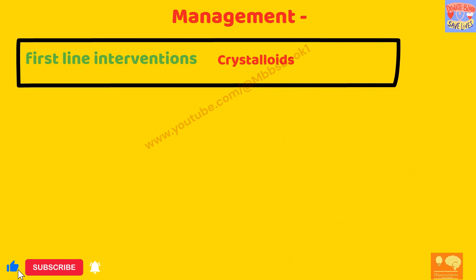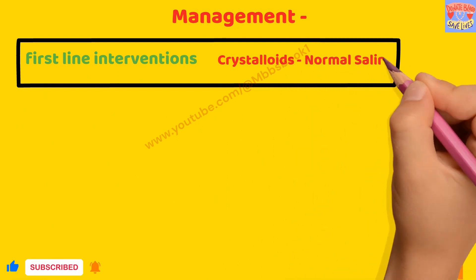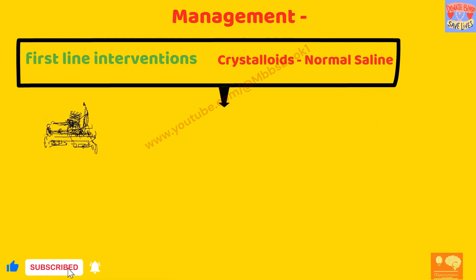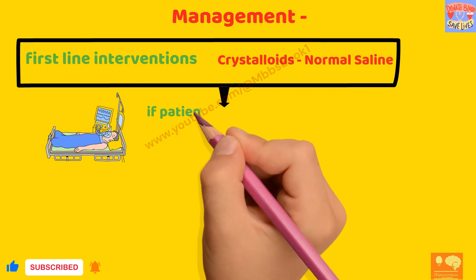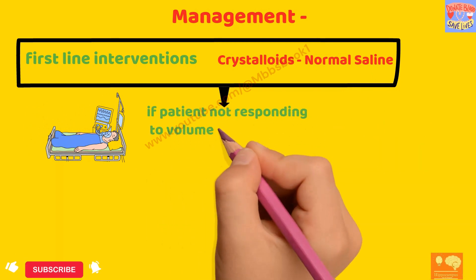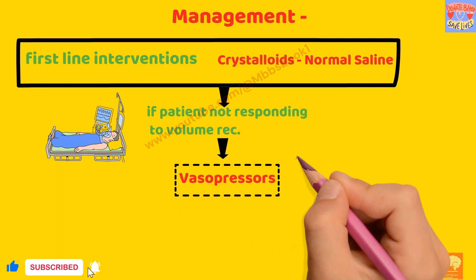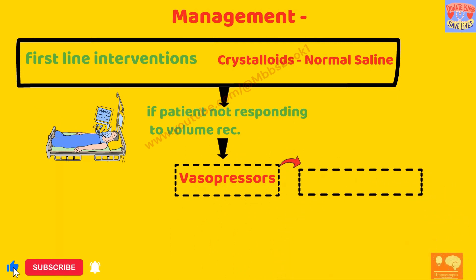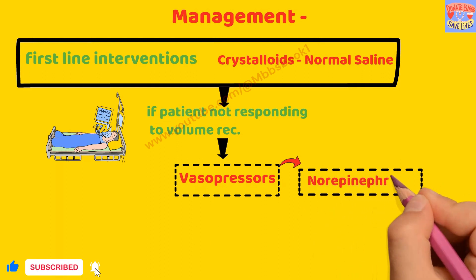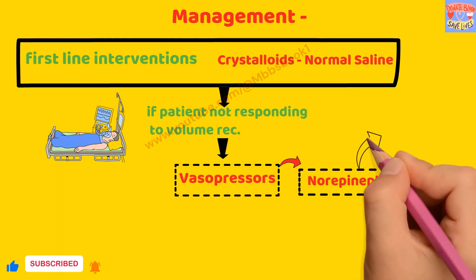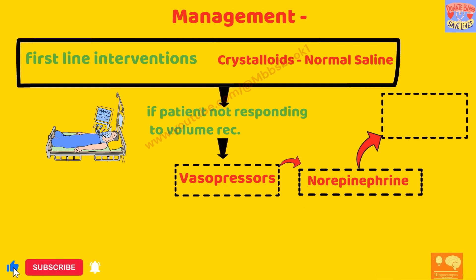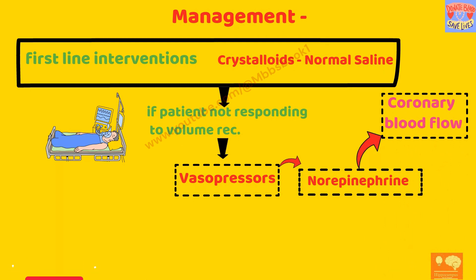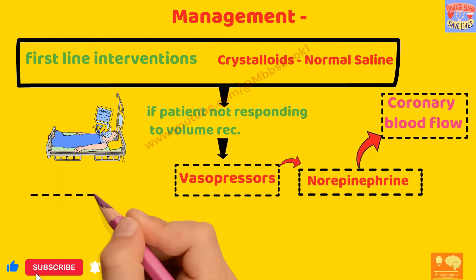The first-line crystalloid recommended for septic shock is normal saline. Initially we perform volume resuscitation, but if the patient is not responding, we use vasopressors. The preferred vasopressor is norepinephrine. One main advantage of norepinephrine is that it helps maintain coronary blood flow, ensuring the heart is able to maintain perfusion.